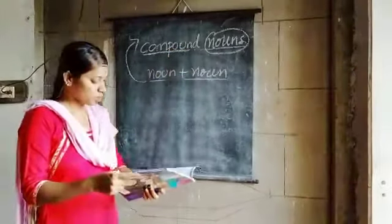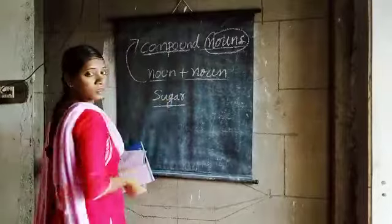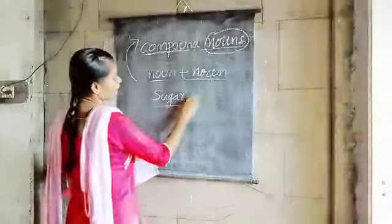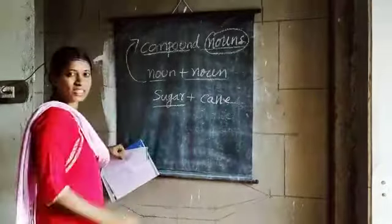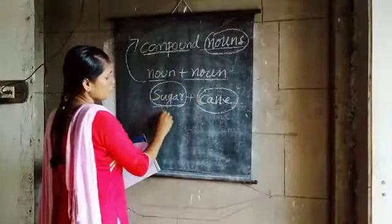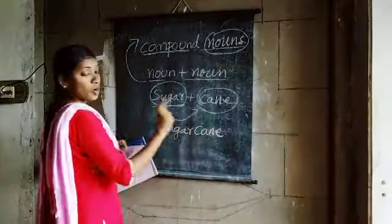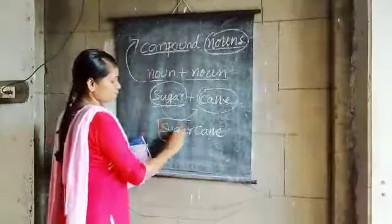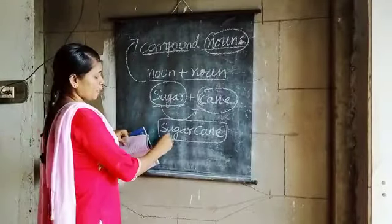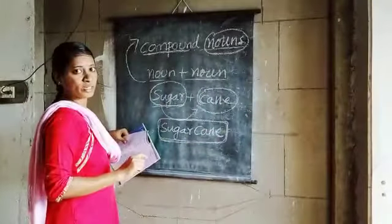Let us see what compound nouns are. For example, they have given us 'sugar' — sugar is a noun, what we keep in coffee and tea. And 'cane' — cane means a stick. Sugar is different and cane is different, but when we mix these two together and write as one word, that is 'sugarcane'. Now it is not two words — sugarcane is one noun, a mixture of two nouns.